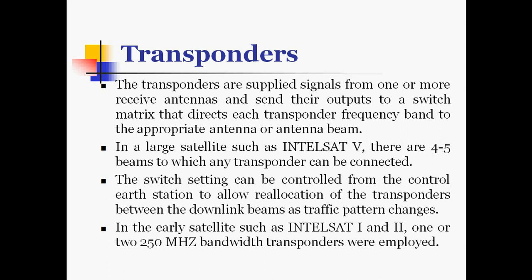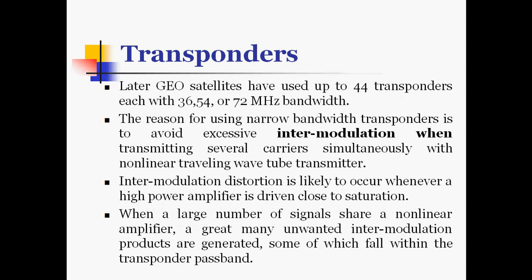In early satellites such as IntelSAT-1 and 2, one or two 250 MHz bandwidth transponders were employed. Later, geo satellites have used up to 44 transponders each with 36, 54, or 72 MHz bandwidth. The reason for using narrow bandwidth transponders is to avoid excessive intermodulation when transmitting several carriers simultaneously with non-linear travelling wave tube transmitters.